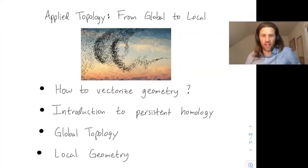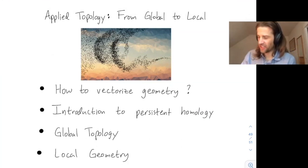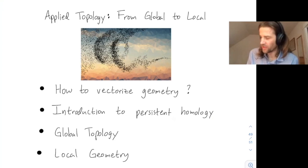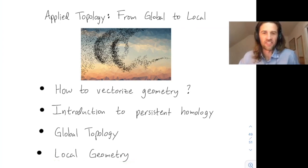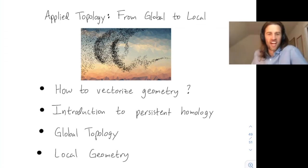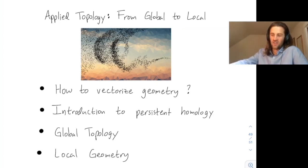In summary, it's a quite attractive problem: how do you vectorize geometry for use in machine learning? Persistent homology is only one such way to do so. Persistent homology was invented largely to measure global topology, but machine learning has surprised us, and we now understand better that it's the local geometry measured by persistent homology that's being used all the time in machine learning applications. Thank you for your time and I'm happy to take questions now or by email.